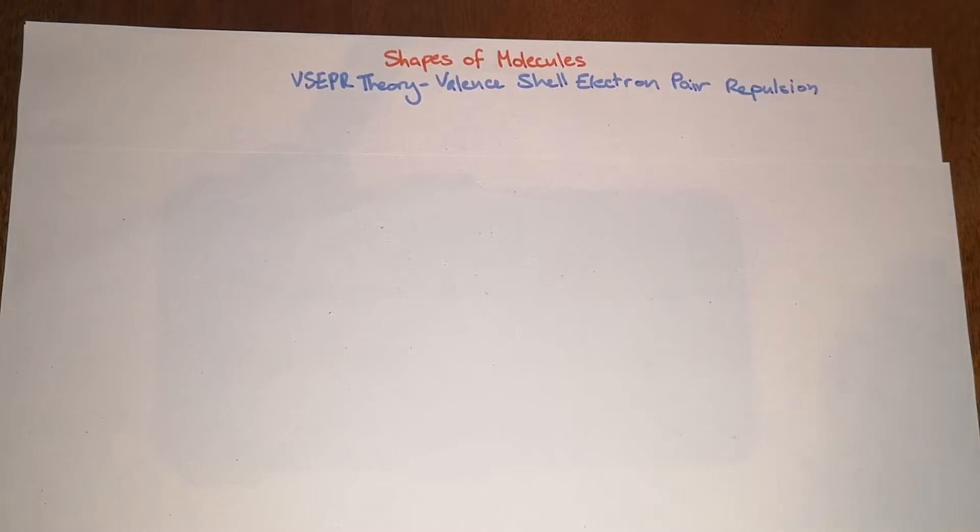There's this theory called VSEPR theory which means valence shell electron pair repulsion. It's quite a mouthful but basically it's just a set of rules that help you predict what the shape of a molecule is going to be.